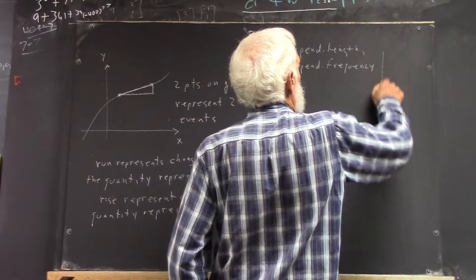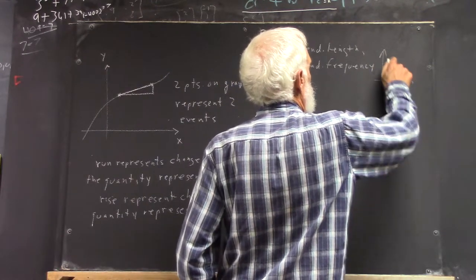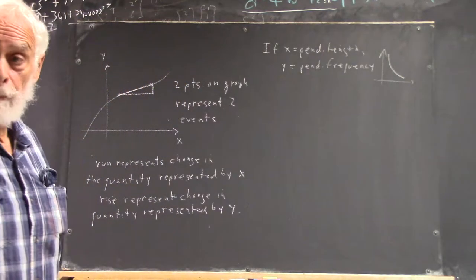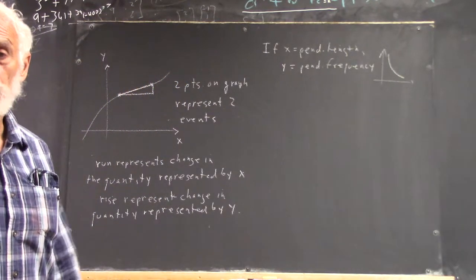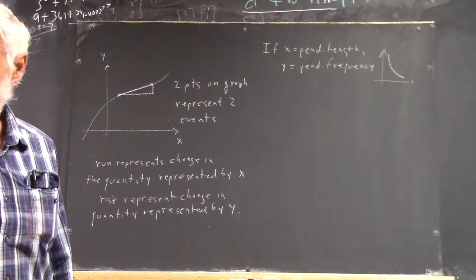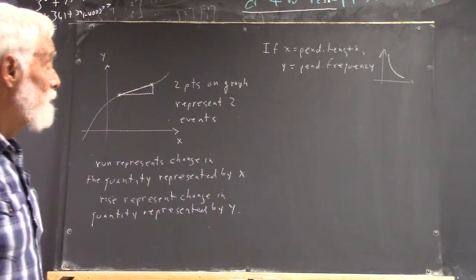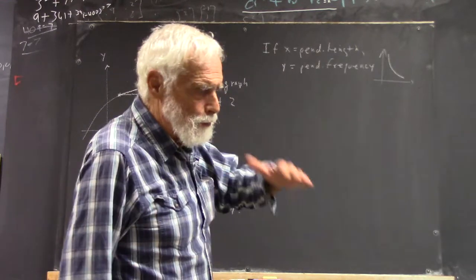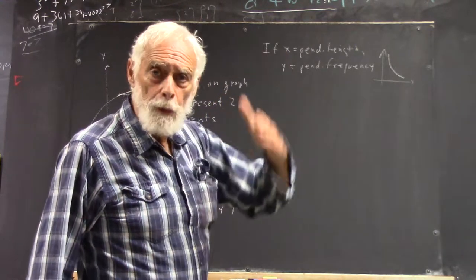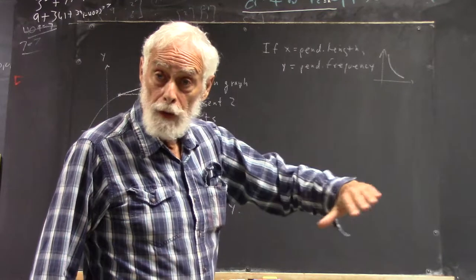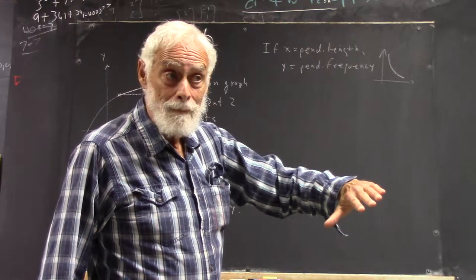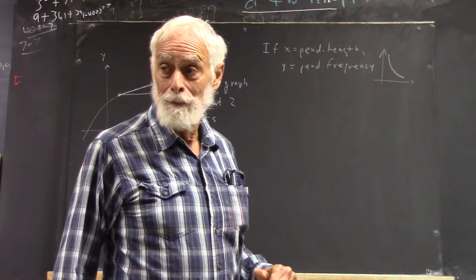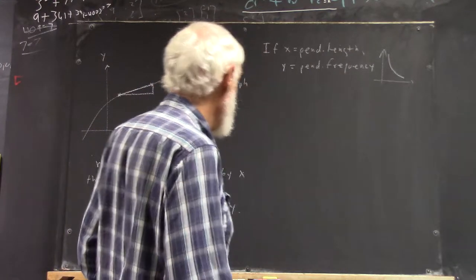So we might as well just draw what that graph looks like. It's not really the one over x function, but it kind of looks like it. You know how the one over x squared function is steeper than the one over x function? Well, the function for the pendulum is steeper than that, but it still has the same basic shape.